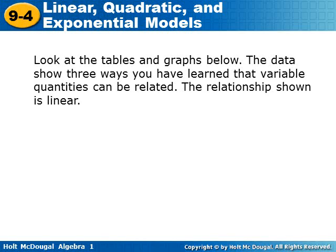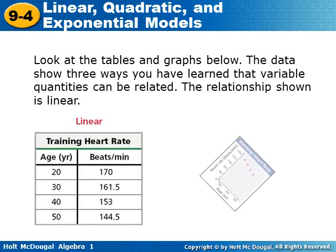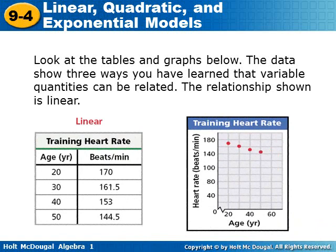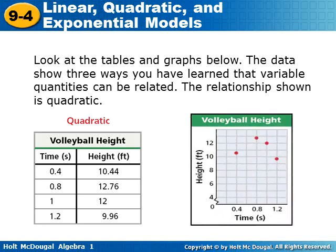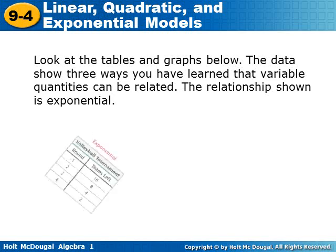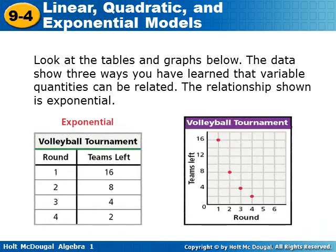Look at the tables and graphs below. The data show three ways you've learned that variable quantities can be related. The first relationship shown is linear — when you plot the points, it forms a line. The second is quadratic — plotting the points shows a parabola shape. And the third is exponential — when you plot the points, you can see a smooth curve.